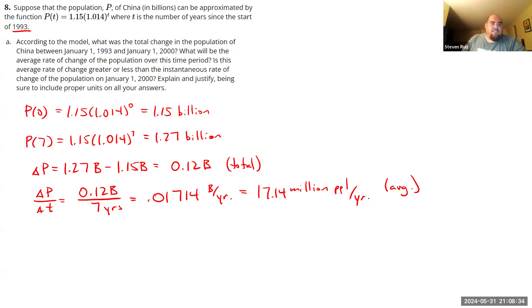So next question. Is this average rate of change greater or less than the instantaneous rate of change of the population on January 1st, 2000? So we don't have, given the tools we have right now, we don't have a way to get the instantaneous rate of change of population at any one point. But we can think about this.